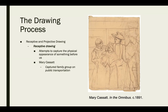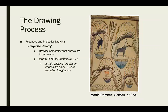There are two types of drawing: receptive and projective. Receptive drawing tends to capture things physically appearing before us as they appear. An example is Mary Cassatt's sketch done on a train — a captured family group on public transportation. She's trying to translate what she sees directly in front of her into a drawing without taking liberties. It's receptive: she's not straying far from what she's visually seeing.